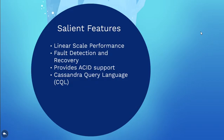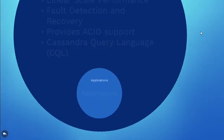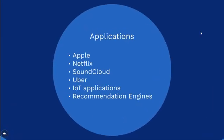Cassandra introduced the Cassandra query language CQL which is an SQL-like language which allows you to access the Cassandra database. Some of its applications include its use by tech giants like Apple, Netflix, SoundCloud and Uber. Netflix uses Cassandra as their back-end database for their streaming services. Cassandra is perfect for Internet of Things applications and recommendation engines used by websites online.